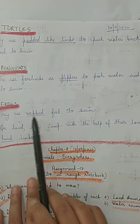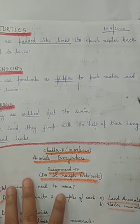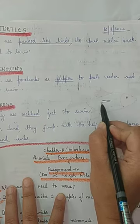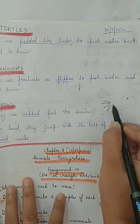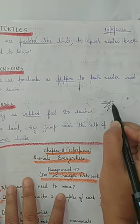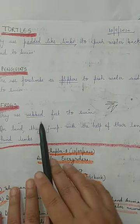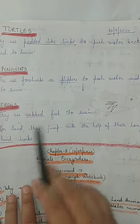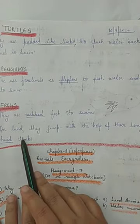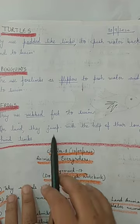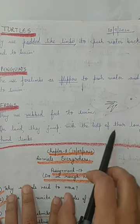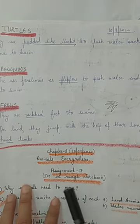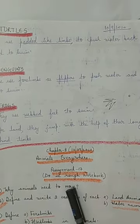Frogs have webbed feet — a membrane-like structure between their toes. They use their webbed feet to swim in water. But when frogs are on land, they jump with the help of their hind limbs.